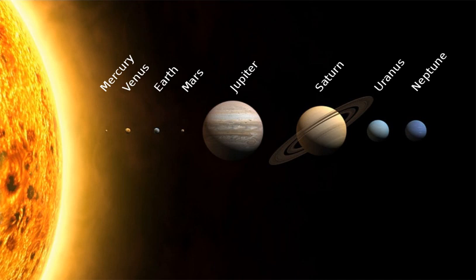7.1.2 Saturn. Saturn, 9.5 astronomical units, distinguished by its extensive ring system, has several similarities to Jupiter such as its atmospheric composition and magnetosphere. Although Saturn has 60% of Jupiter's volume, it is less than a third as massive at 95 Earth masses. Saturn is the only planet of the solar system that is less dense than water. The rings of Saturn are made up of small ice and rock particles. Saturn has 82 confirmed satellites composed largely of ice. Two of these, Titan and Enceladus, show signs of geological activity. Titan, the second largest moon in the solar system, is larger than Mercury and the only satellite in the solar system with a substantial atmosphere.